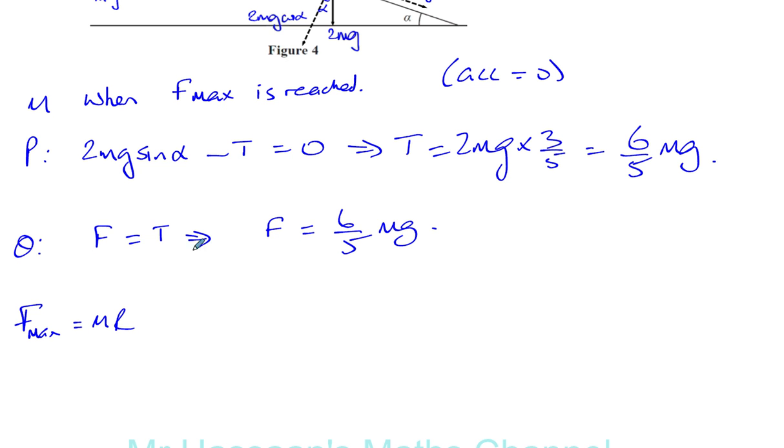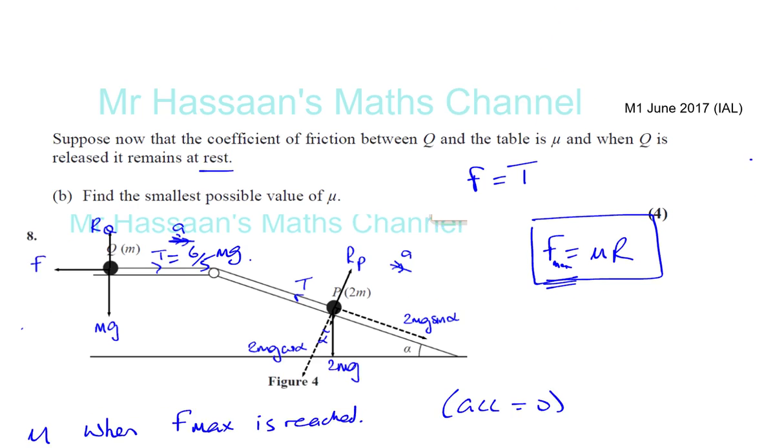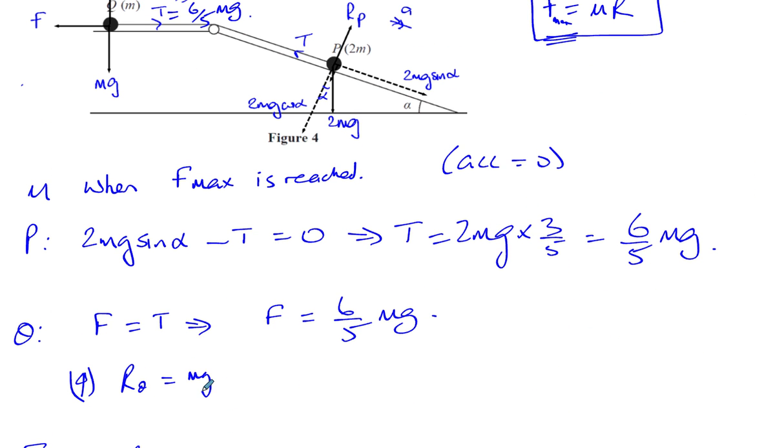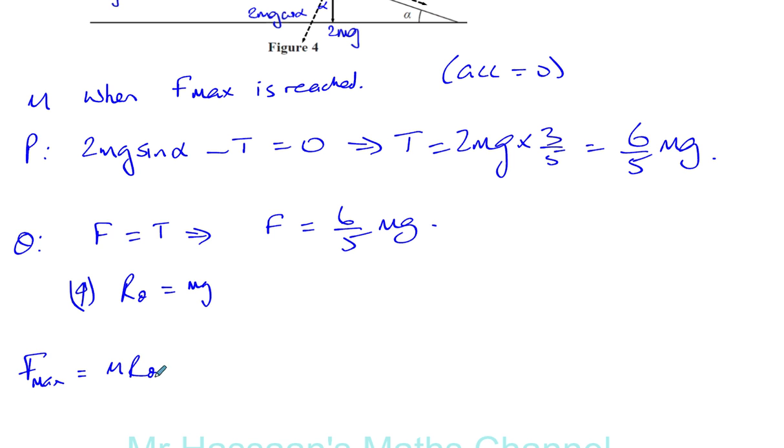And we can see from Q, if we resolve vertically at Q, let me just move this down a bit. If I resolve vertically, the reaction force at Q is equal to mg because it's not moving at that point. So we can say now that F max is equal to mu times mg.